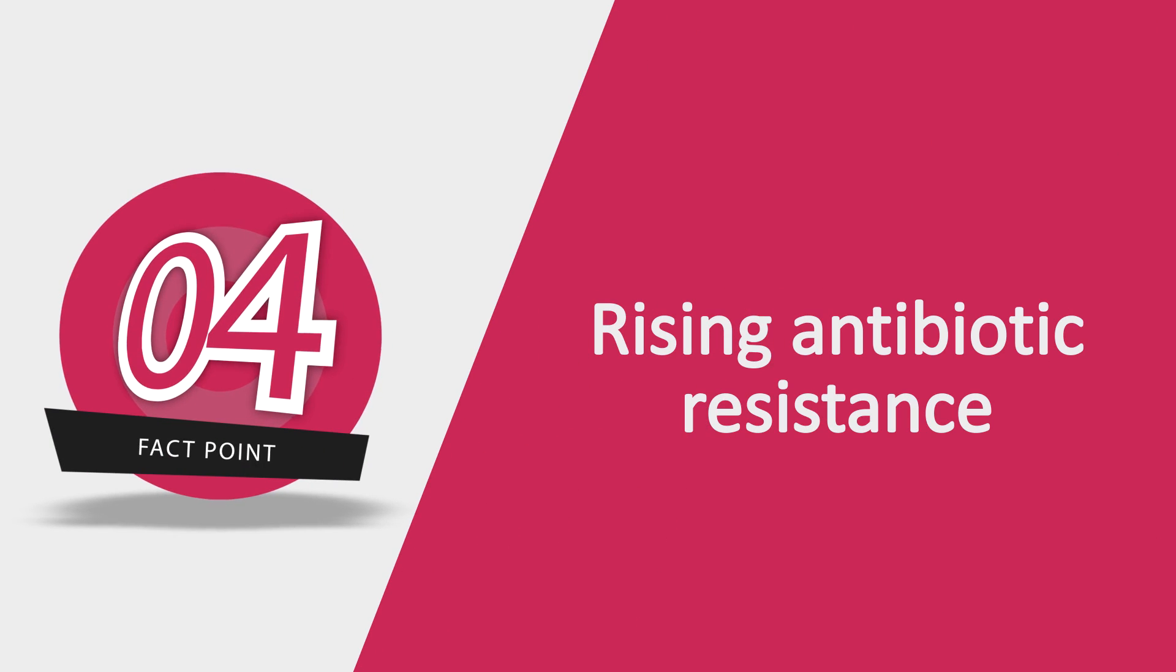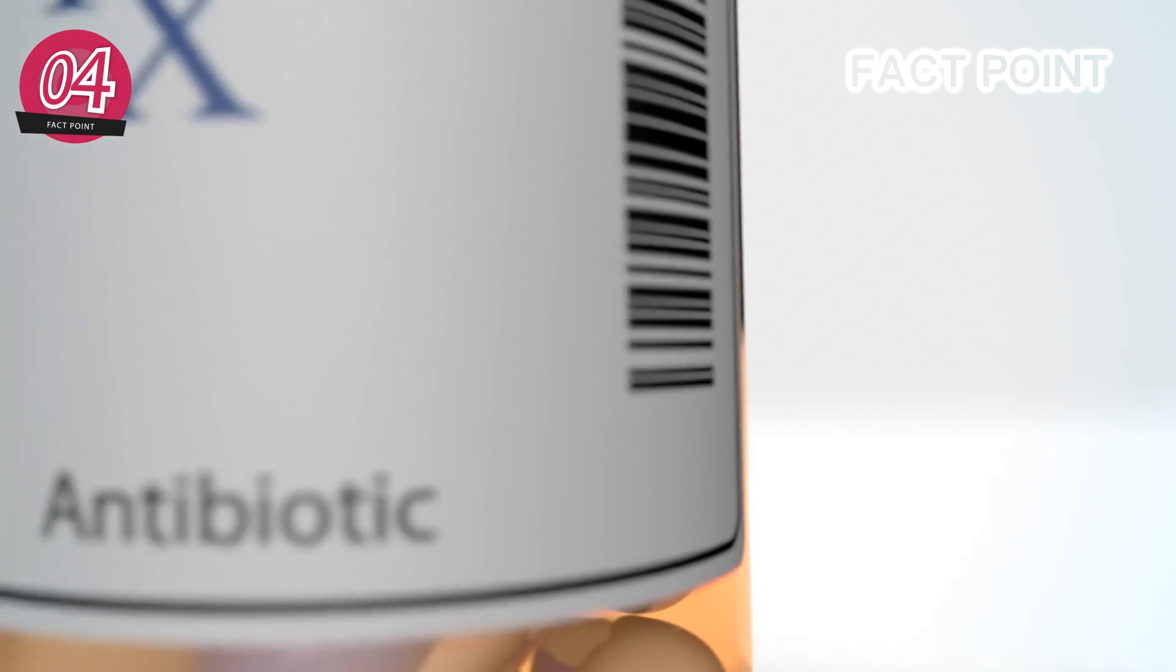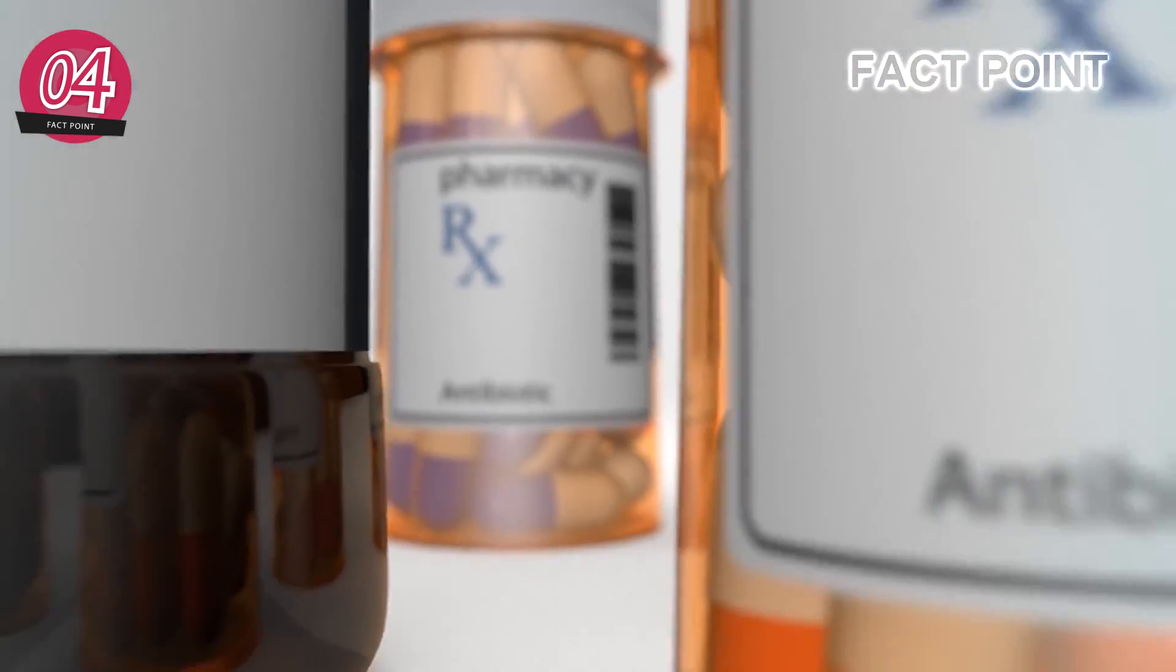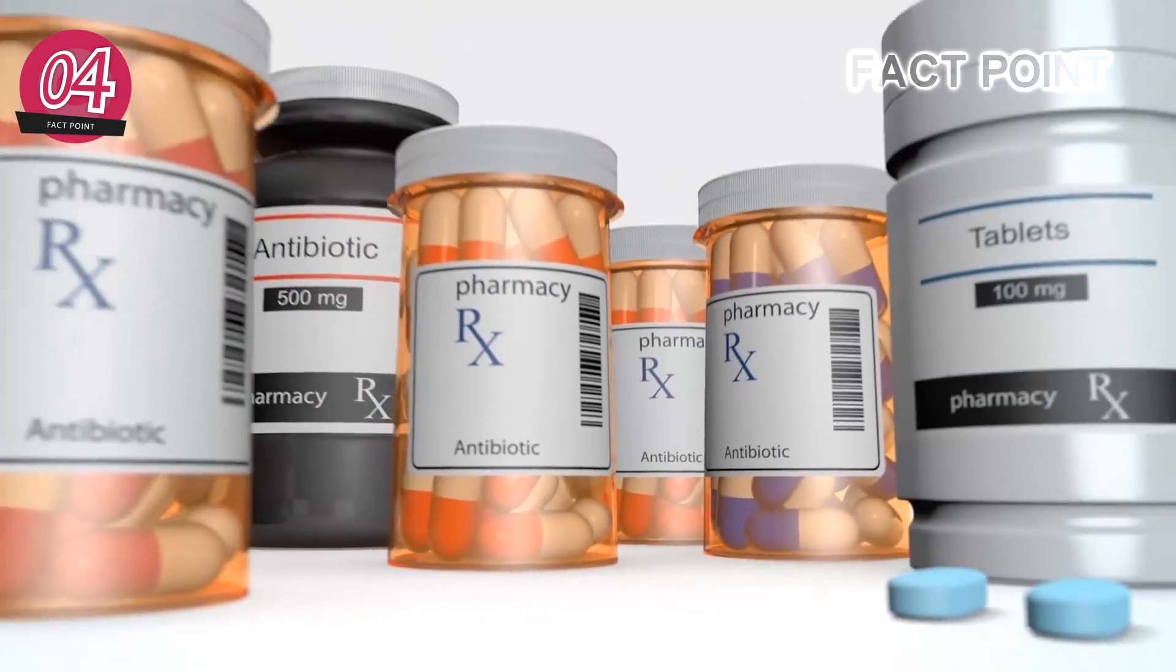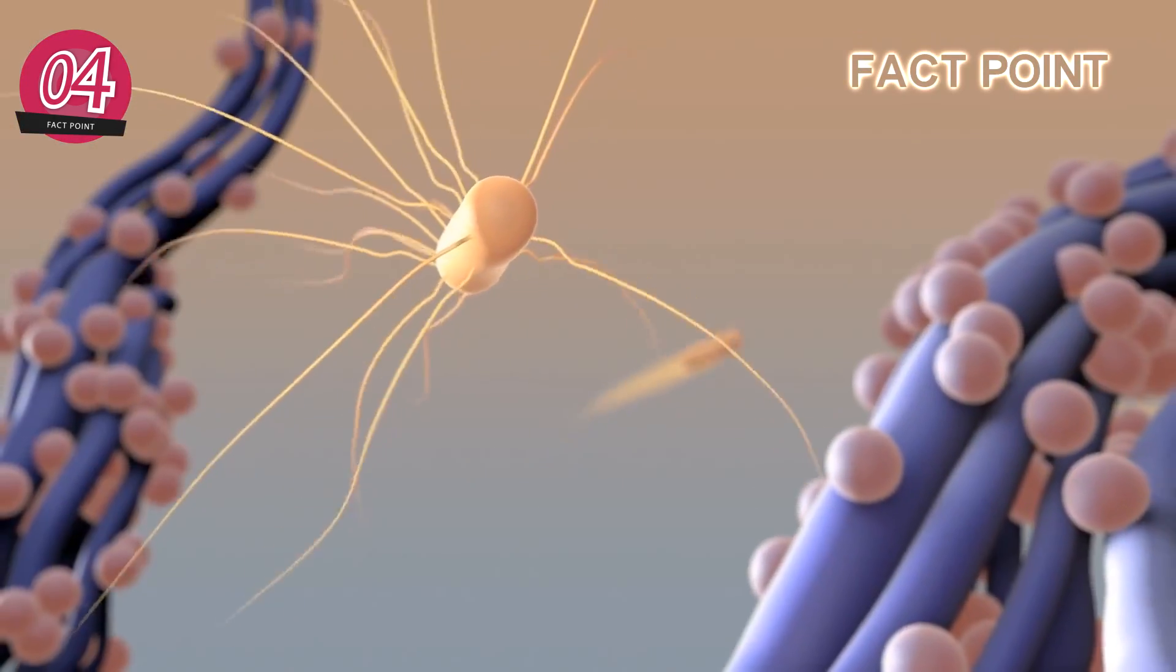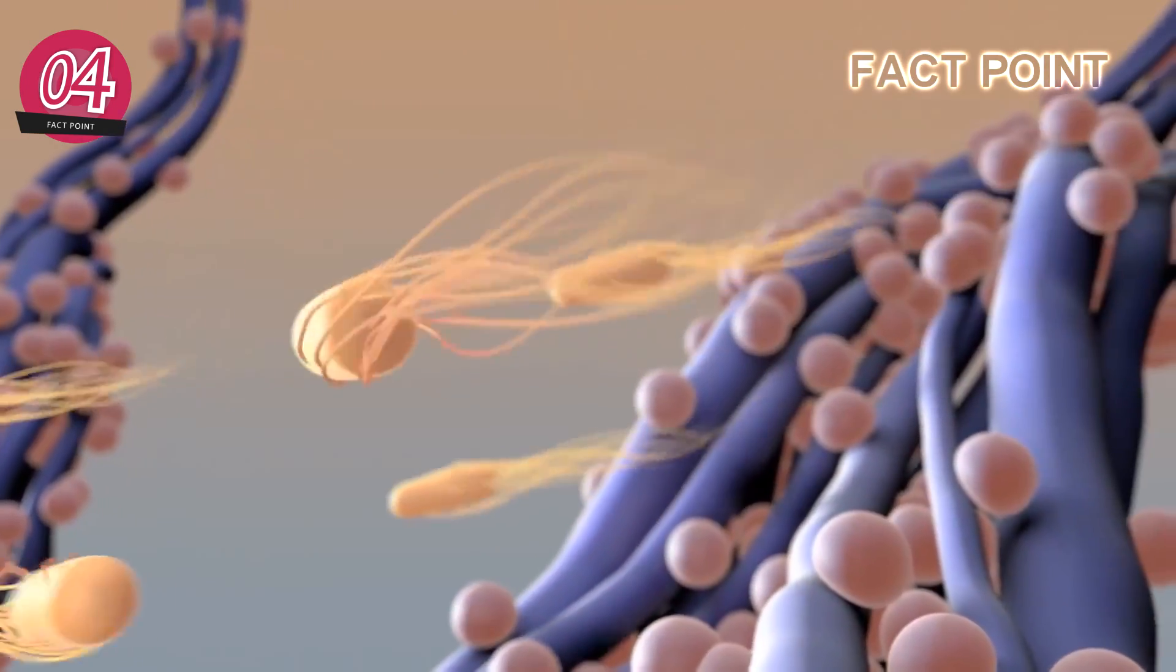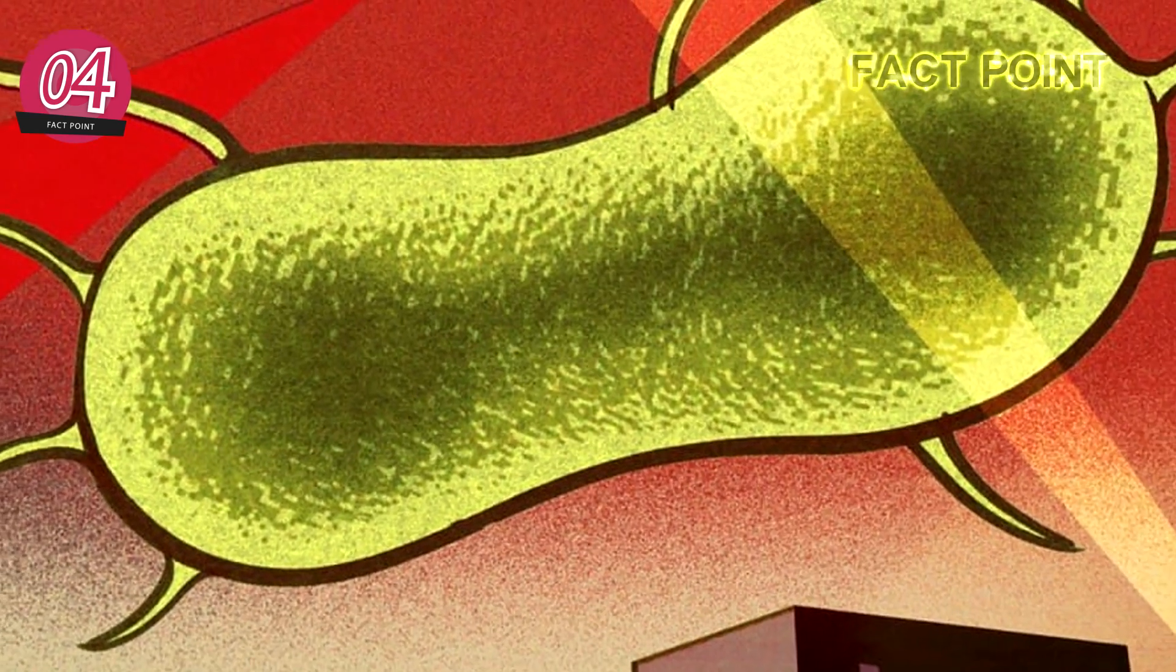Number 4: Rising Antibiotic Resistance. Perhaps the scariest of all these doomsday scenarios is the rising antibiotic resistance. It is something we cannot always be certain about and can likely happen. Don't believe us? After September 21st Convocation the previous year, the UN declared antibiotic resistance as the greatest and most urgent global risk, more so than climate change apparently.